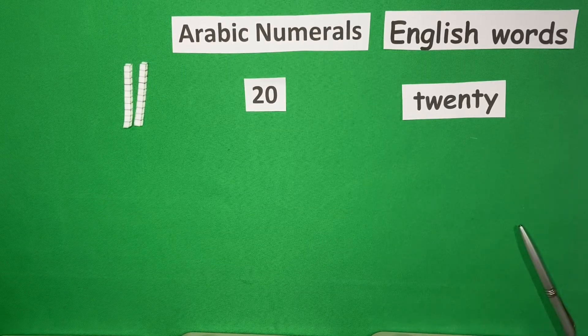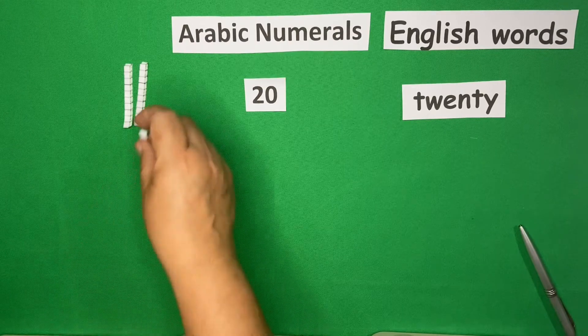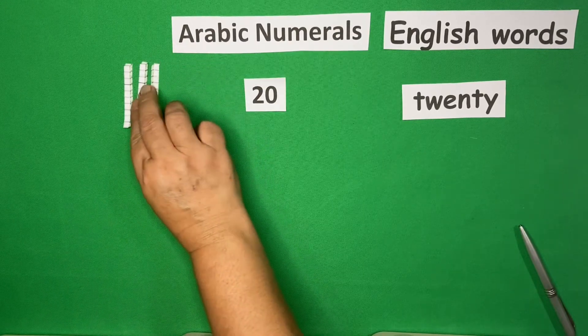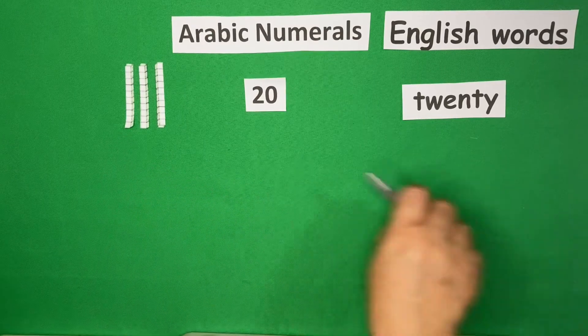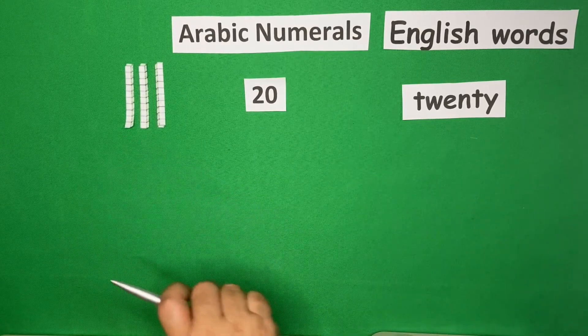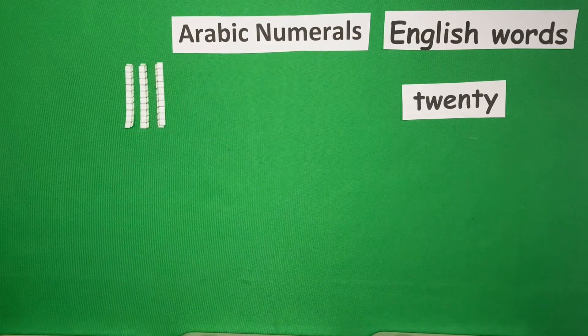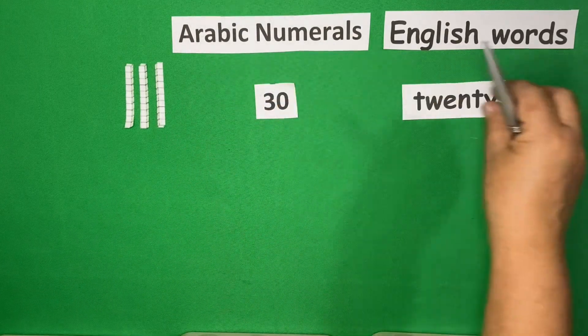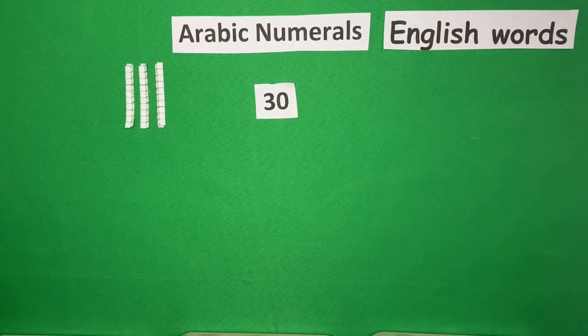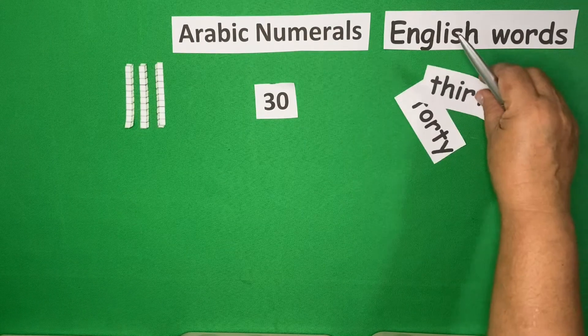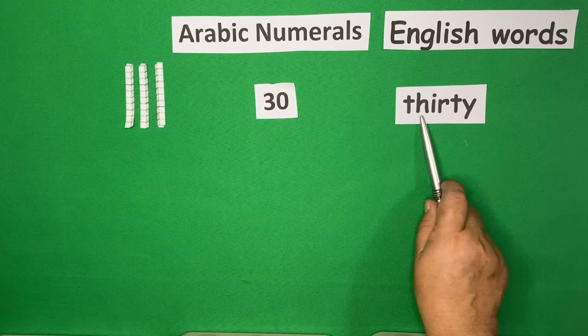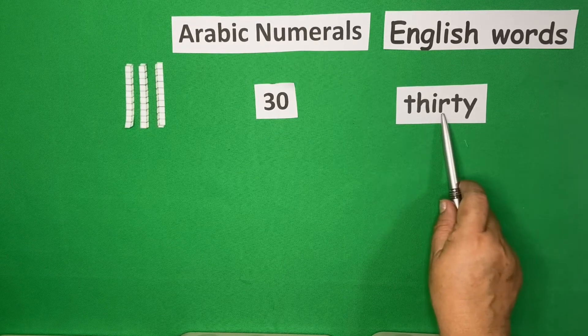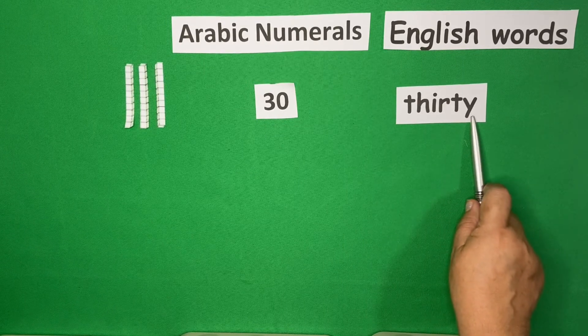Next, we will add 1 more here. So, we have 10, 20, 30. So this is now 30. And we spell 30 as T-H-I-R-T-Y.